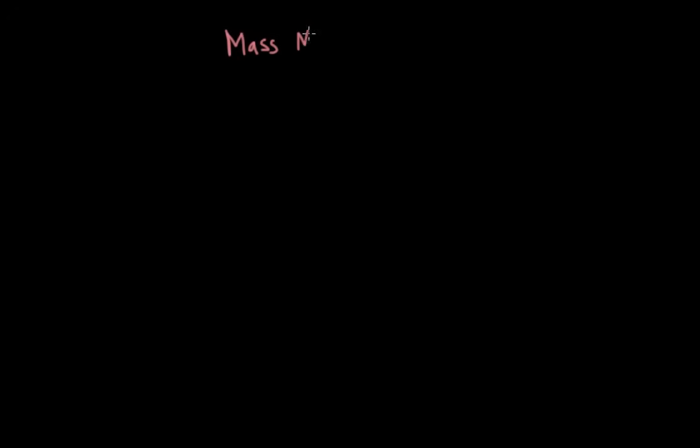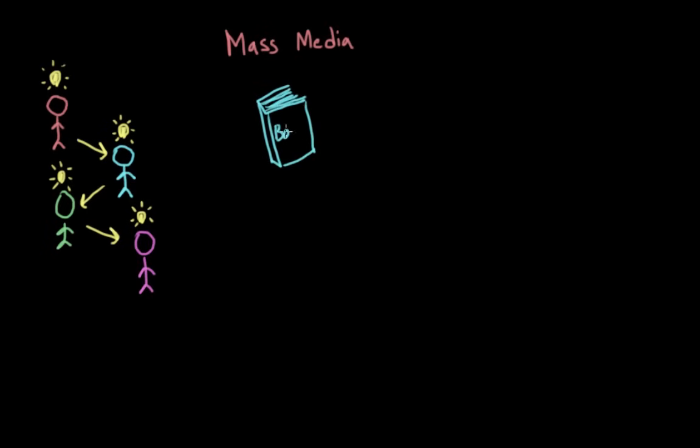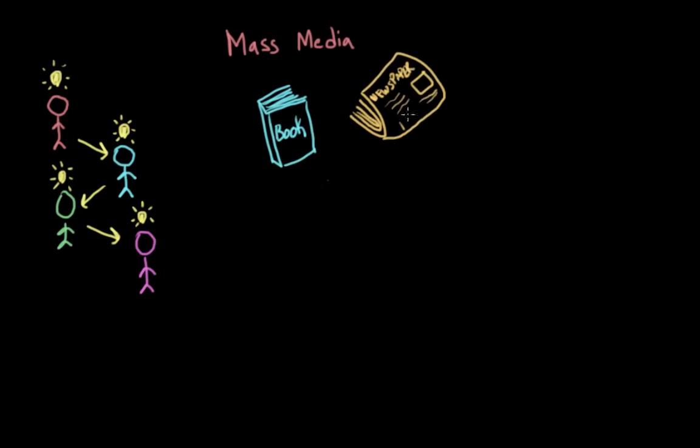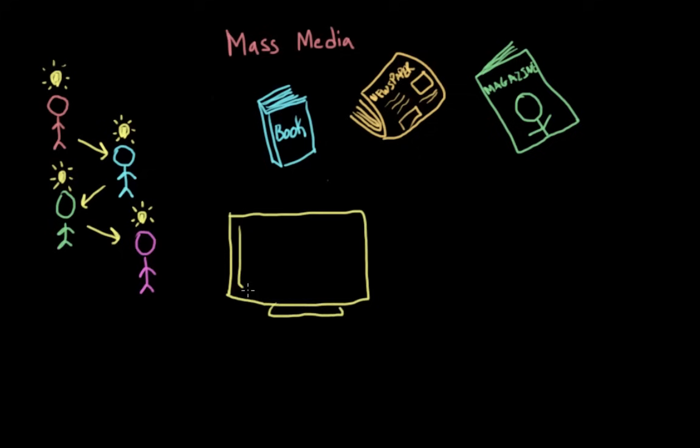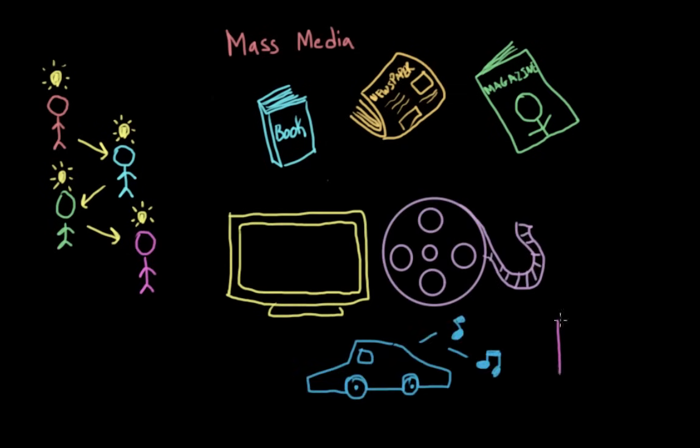But what exactly are we talking about when we talk about mass media? Well, we're talking about the dissemination of information, or how information is transmitted within a culture. And this could include print media, like books, newspapers, and magazines, as well as digital media, like TV, movies, radio, and the internet.